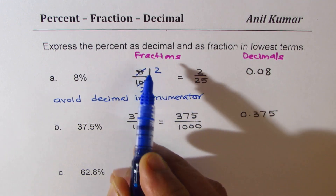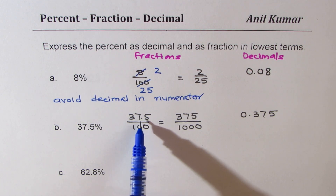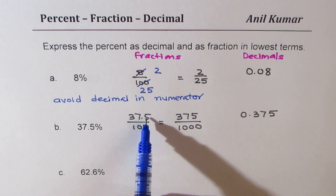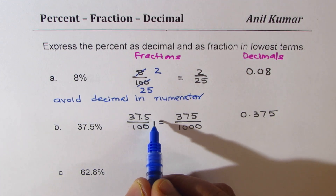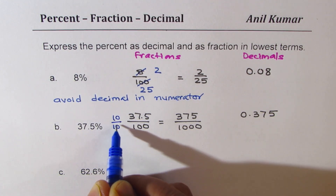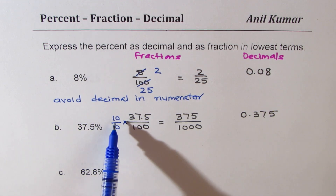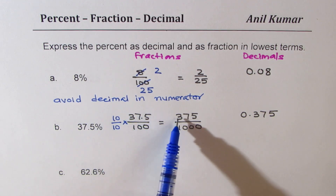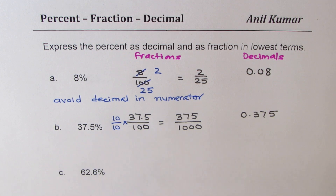Whenever you write fractions, you never see fractions with a decimal in the numerator. Since there was one decimal place, we multiply both by 10 — multiplying the numerator by 10 gives us 375, and the denominator by 10 gives us 1000.